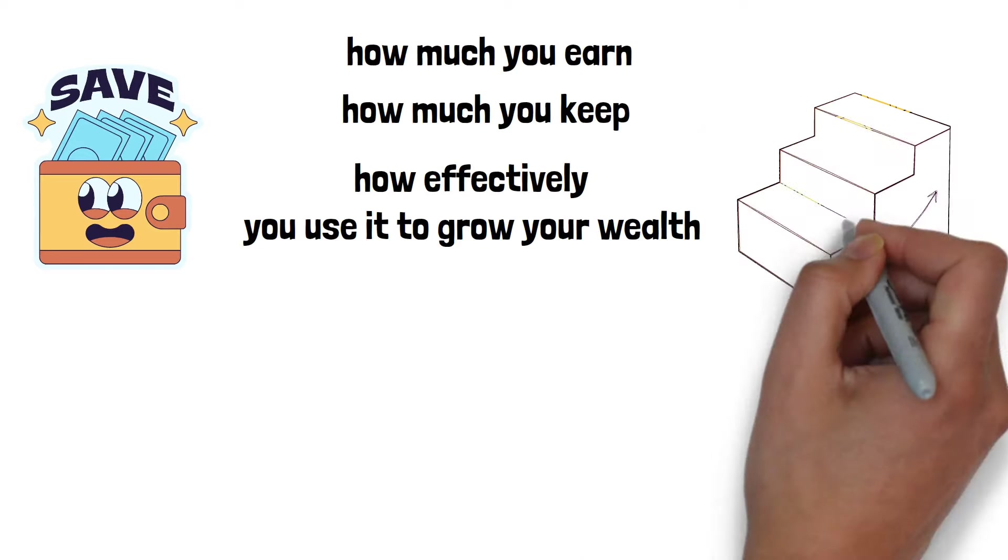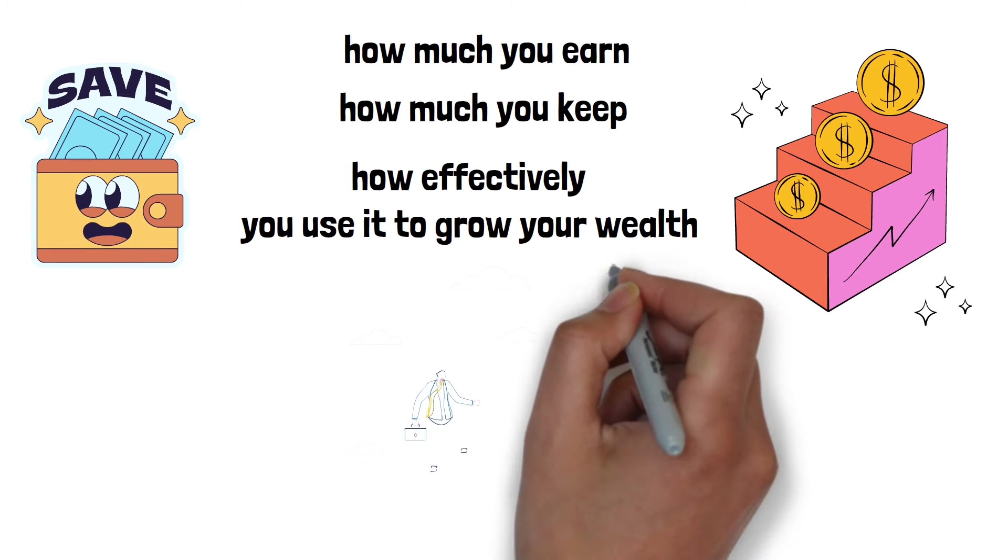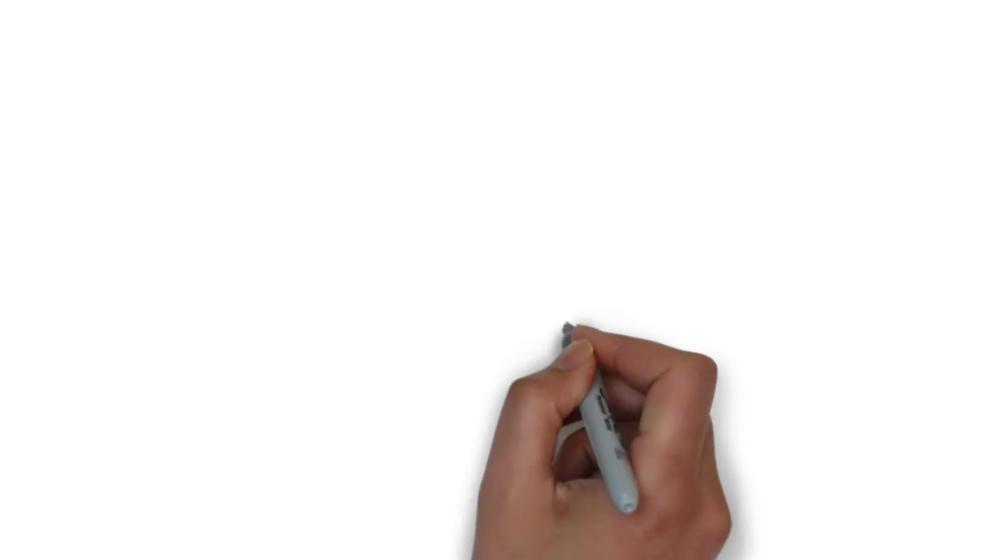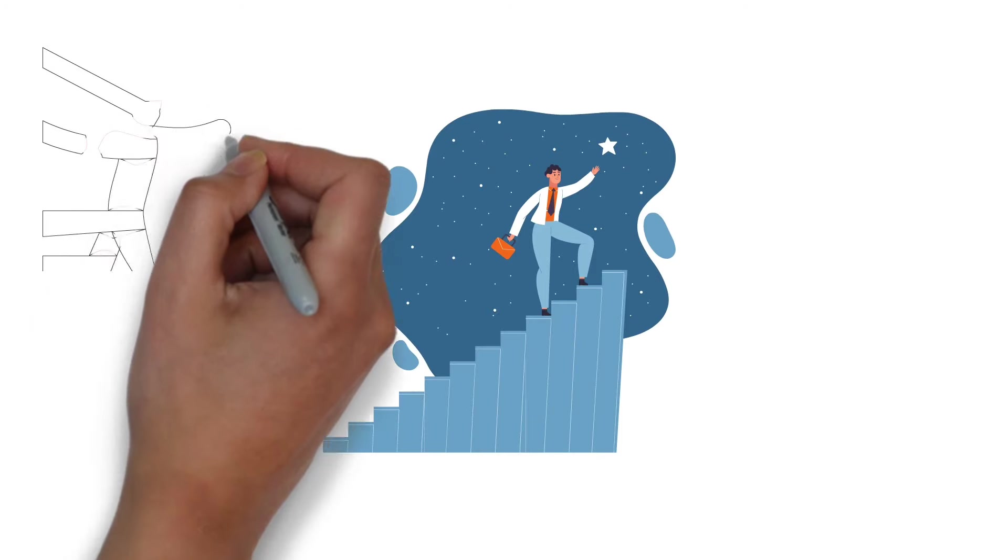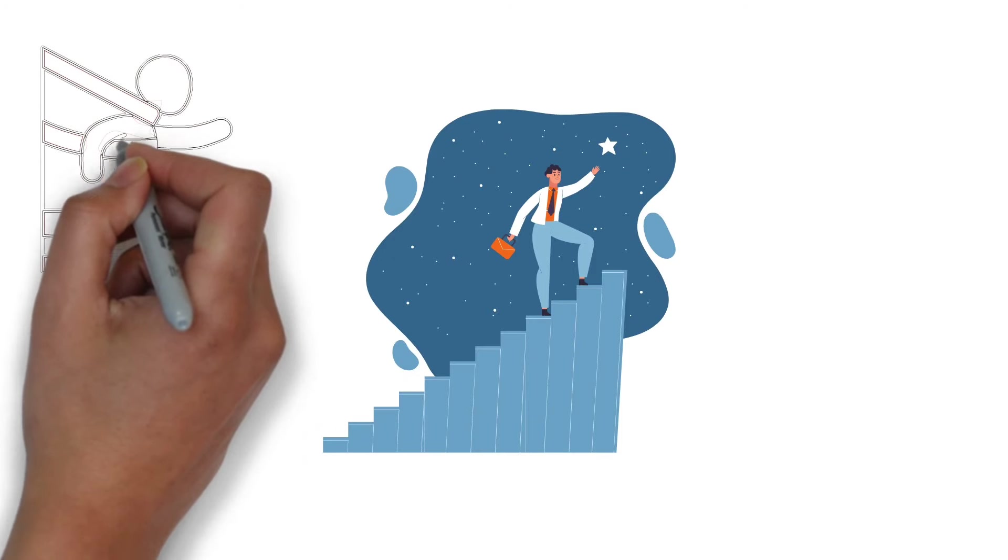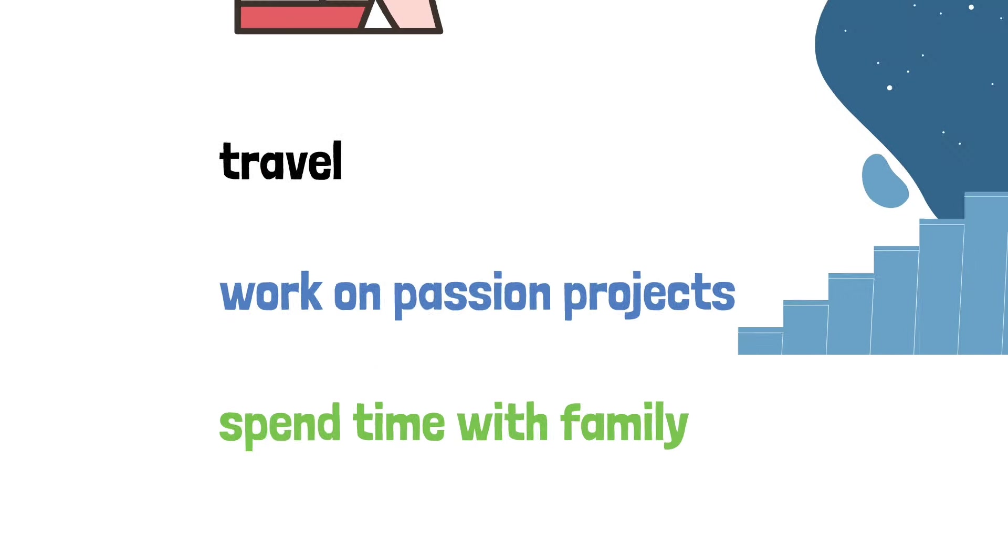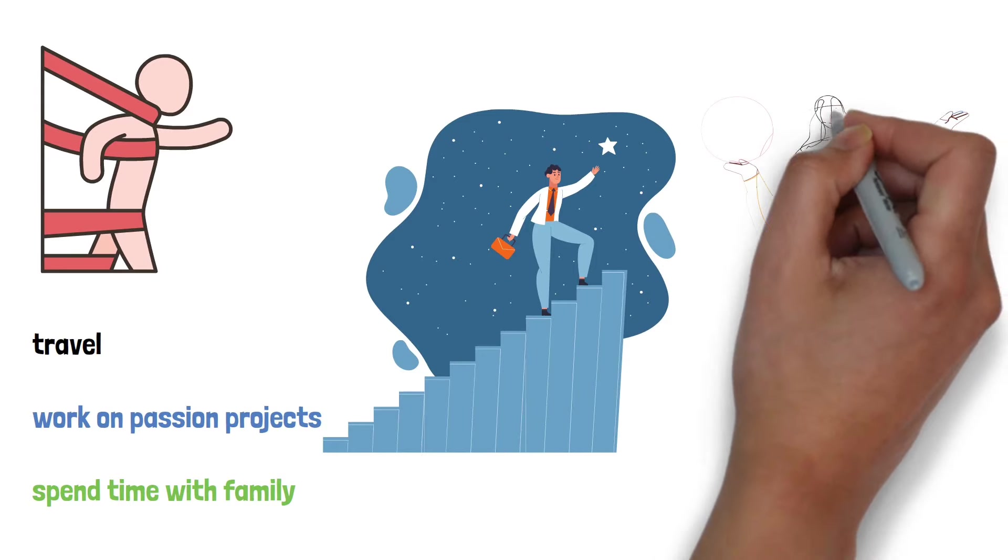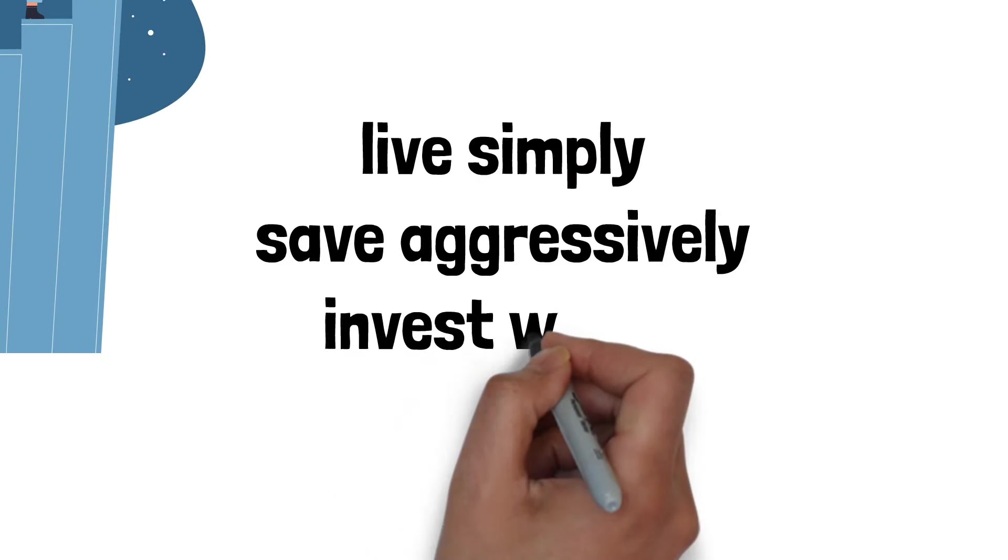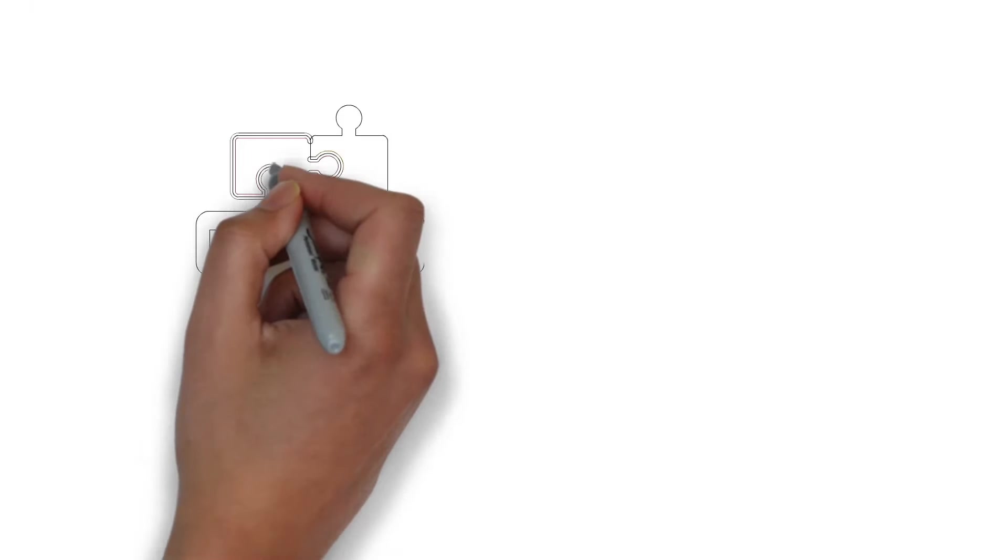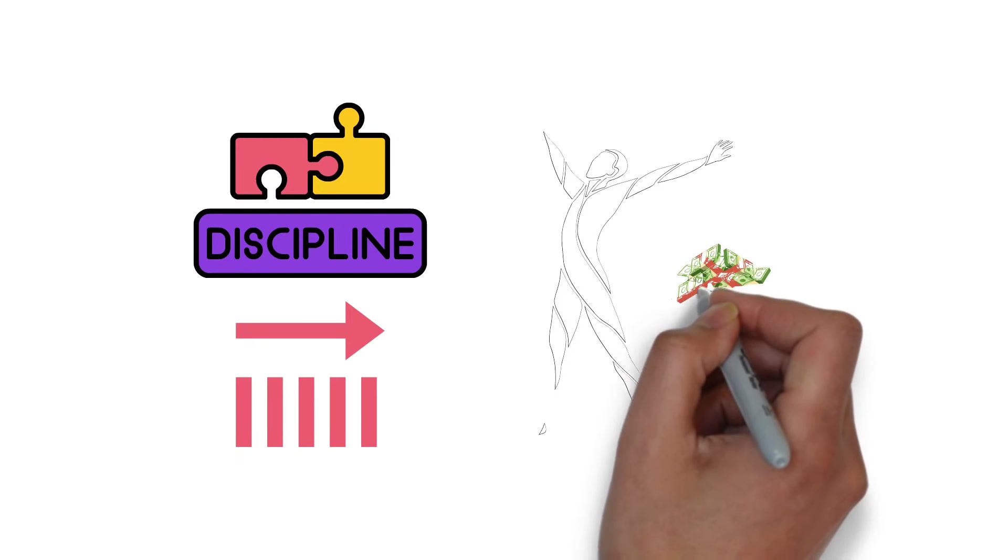Once you've saved enough, you invest those savings into the stock market, primarily through low-cost index funds. The goal is to harness the growth of the economy over time. As your investments grow, you reach a point where the returns on your investments can cover all your living expenses. This idea promotes a shift from working for money to having your assets generate enough income for you, effectively giving you the freedom to pursue life on your terms. The strategy is to live simply, save aggressively, invest wisely and be patient. It's a long-term game that requires discipline and consistency. But if followed, it promises a life where money is no longer the central concern and personal freedom is the ultimate reward.